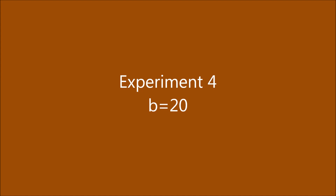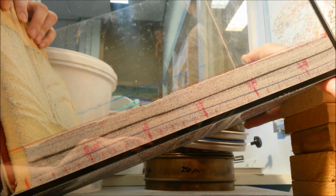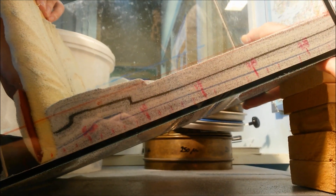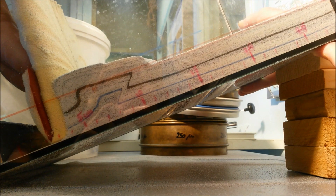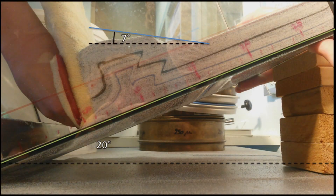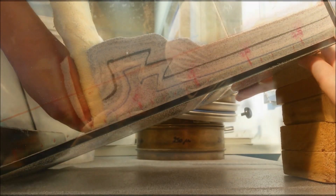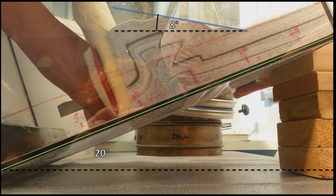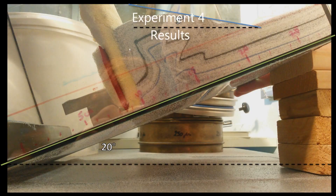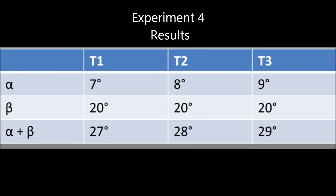For the fourth experiment we tilted the aquarium to an angle of 20 degrees. The results show that alpha has decreased a lot, and alpha plus beta is slightly higher than in the previous experiments.